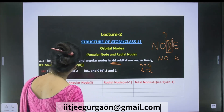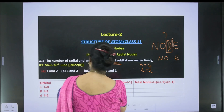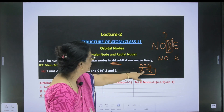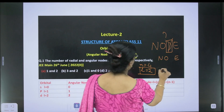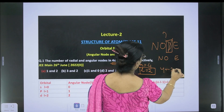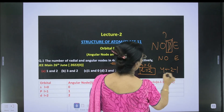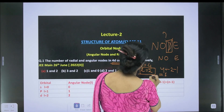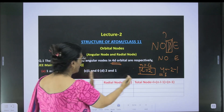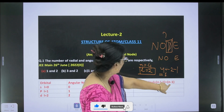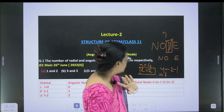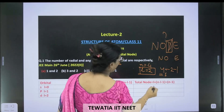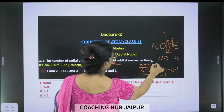For the 4d orbital, the angular node equals l = 2. The radial node equals n minus l minus 1, that is 4 minus 2 minus 1, which equals 4 minus 3, which equals 1. The total number of nodes is the sum of angular and radial nodes: angular node equals l, radial node equals n minus l minus 1, so total equals n minus 1, which is 4 minus 1 = 3.